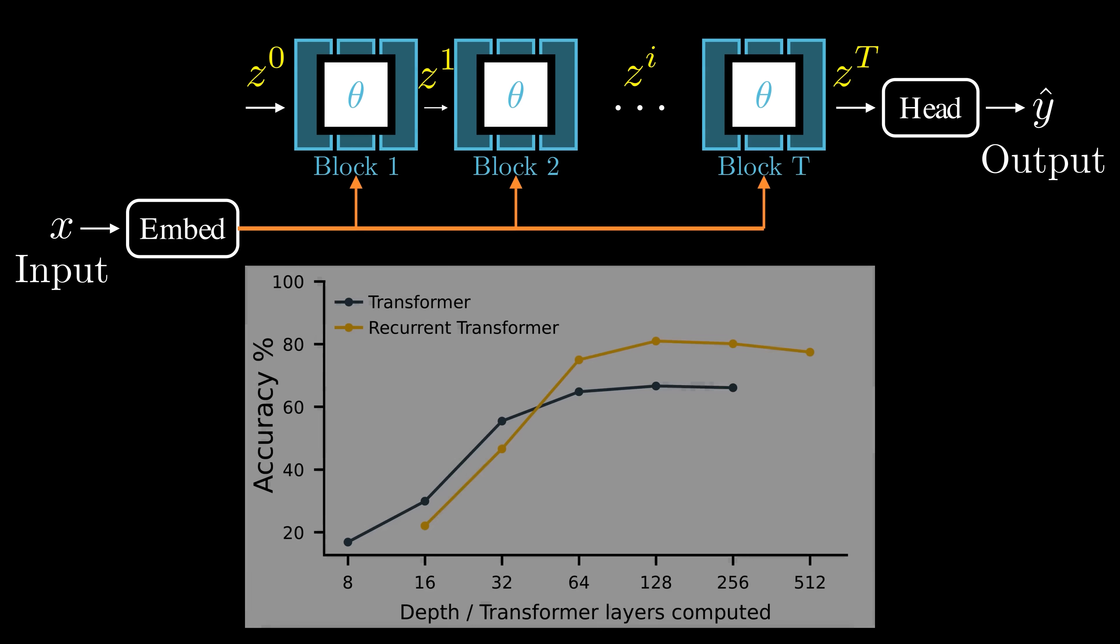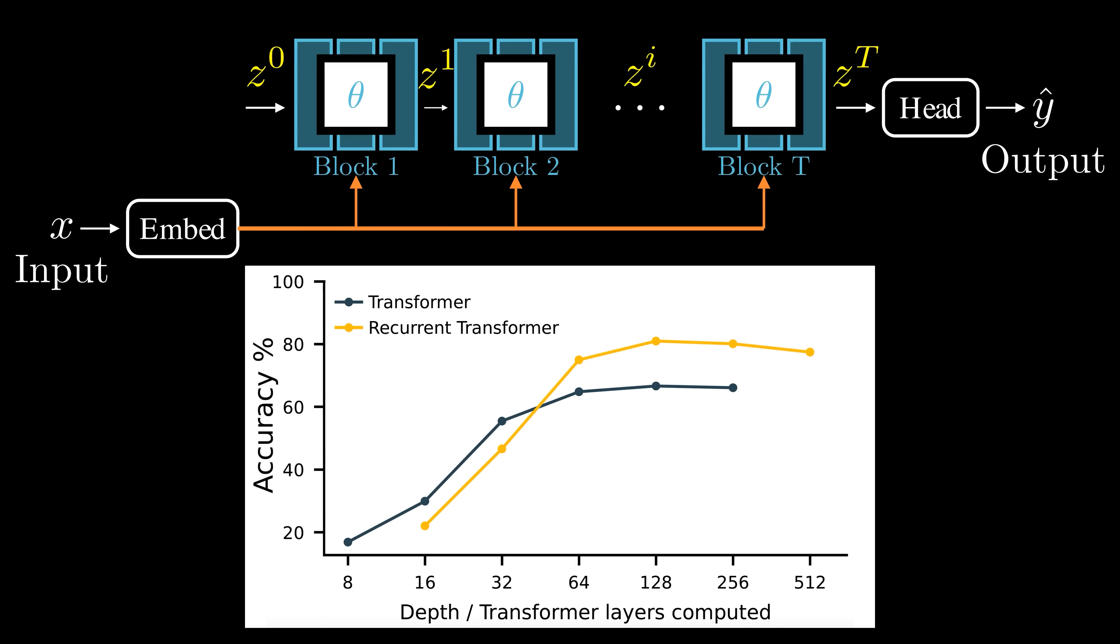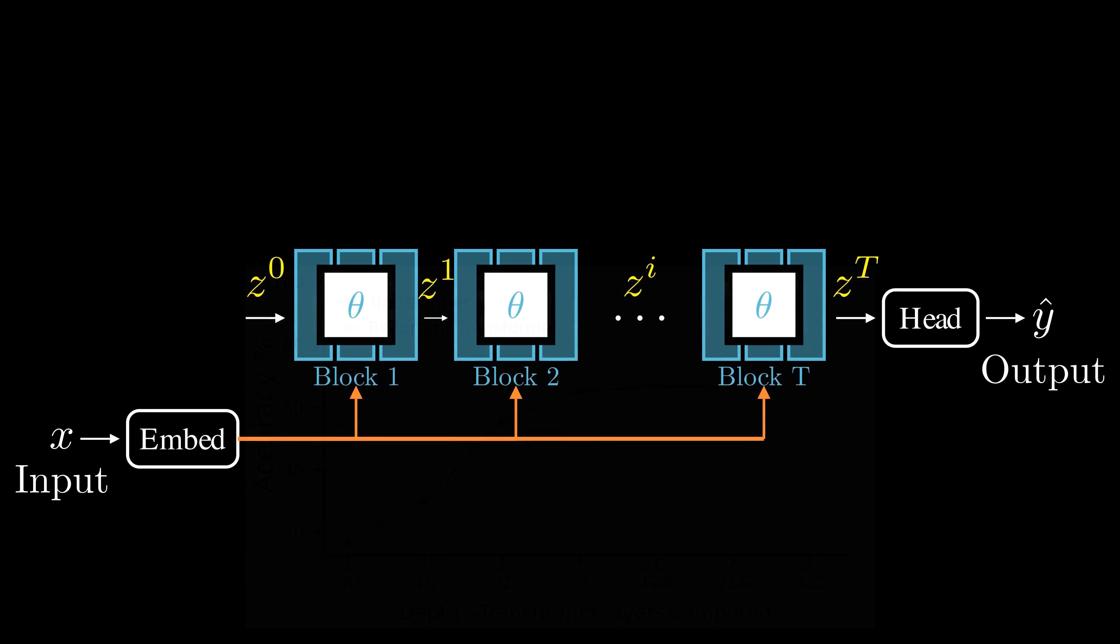Compared to standard transformers, recurrent models with input injection have demonstrated higher accuracy. However, if we keep increasing the number of iterations in the recurrent network, performance eventually plateaus and can even decline as the model gets deeper. So, how can we address this limitation?